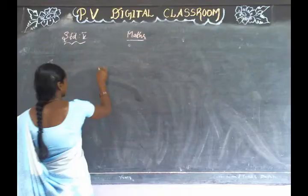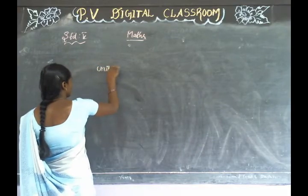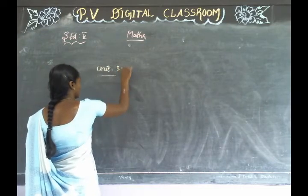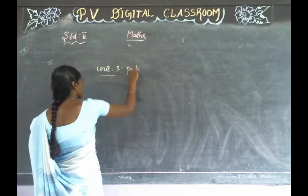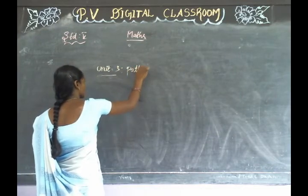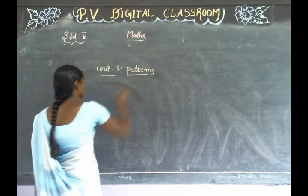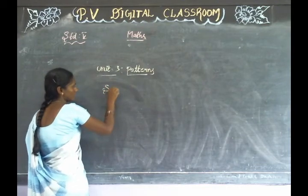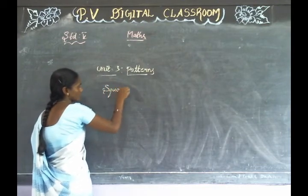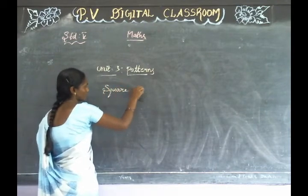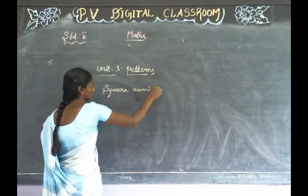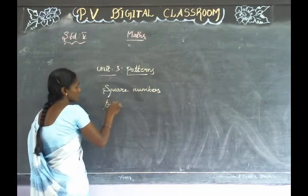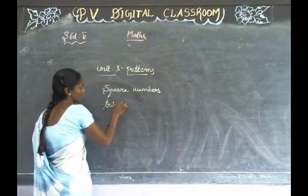Unit number three: patterns — two topics. First: square numbers. Next: triangular numbers.